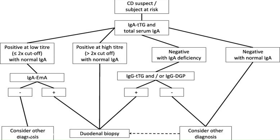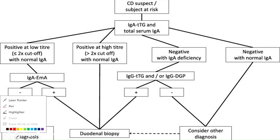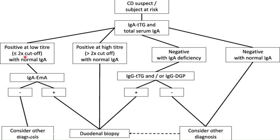When you first suspect a patient with celiac disease on the basis of signs and symptoms, you first advise IgA TTG antibody level and total serum IgA antibody level.